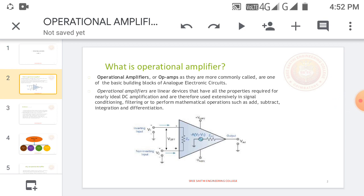Operating amplifiers are linear devices that have all the properties required for nearly ideal DC amplification. They are used extensively in signal conditioning, filtering, and performing mathematical operations such as addition, subtraction, integration, and differentiation.